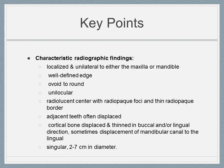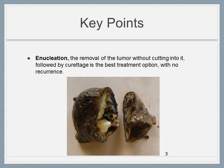Adjacent teeth are often displaced. The cortical bone is also displaced and thinned in the buccal or lingual direction, and sometimes there is displacement of the mandibular canal to the lingual. The lesion is 2 to 7 centimeters in diameter. Enucleation — the removal of the tumor without cutting into it — followed by curettage is the best treatment option, resulting in no recurrence.